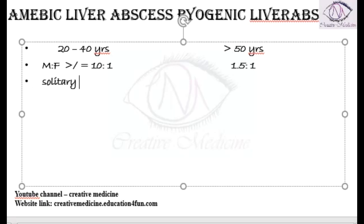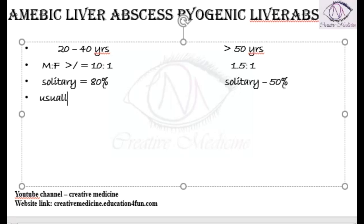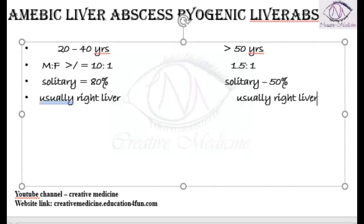Amoebic liver abscess is seen in solitary cases in around 80 percent of cases, whereas pyogenic liver abscess is seen in solitary cases in around 50 percent of cases. Both amoebic and pyogenic liver abscess are usually present on the right side of the liver.